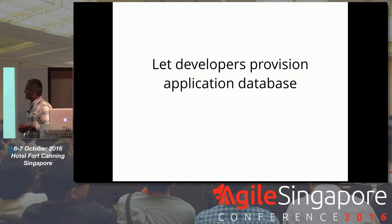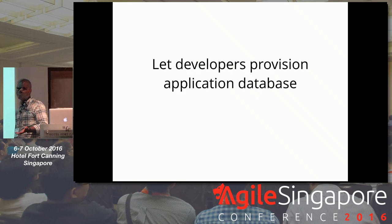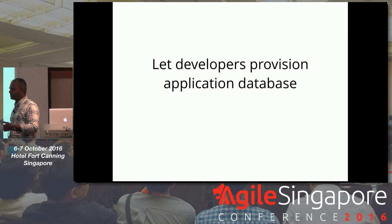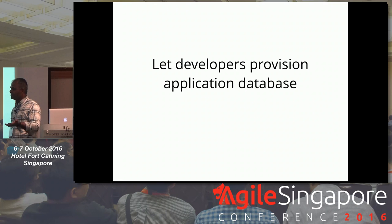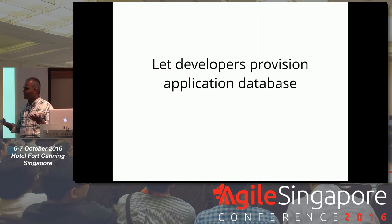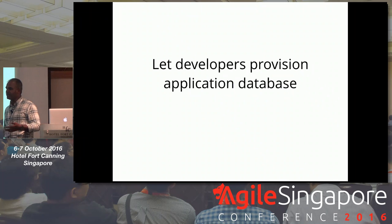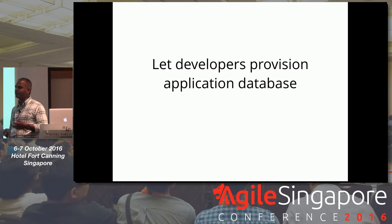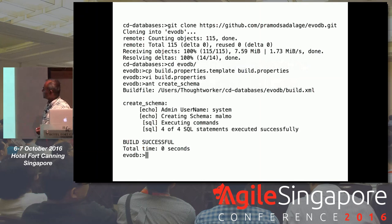You can also do a lot of automation. Let the developers provision their own application database schema. Generally speaking, we ask the DBA to give us a schema, and after a couple of days they reply back. Instead, what if you let developers provision their own schema — like a Docker image or a Vagrant script that brings up a machine with a database they can connect to and work with? That kind of self-provisioning can be done for the developers.